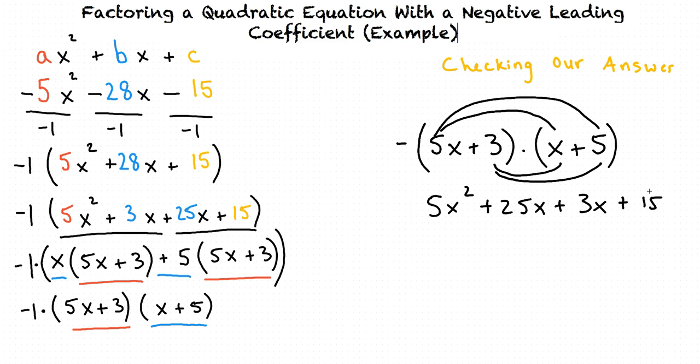We combine our like terms, 25x and 3x, and we still have our negative sign sitting out front. Finally, we distribute our negative sign to each term in the equation, giving us negative 5x squared minus 28x minus 15, which we see does in fact match up with our original quadratic equation. We'll see you next time.